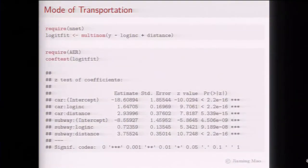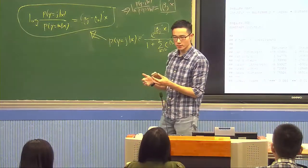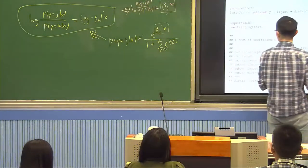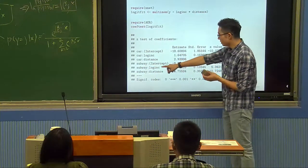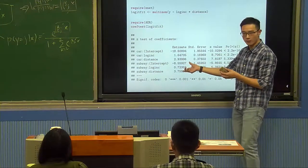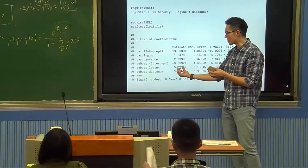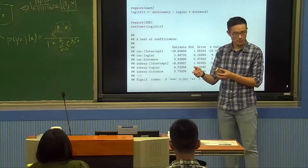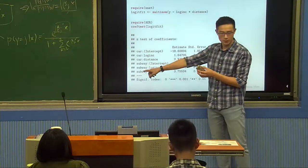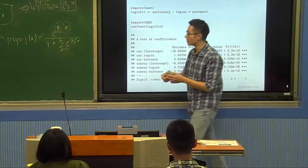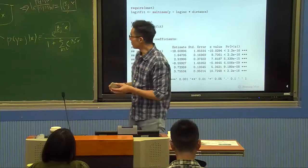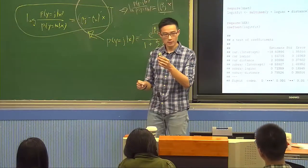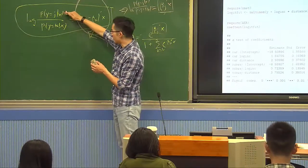In the example from last time, we estimated a choice model where people choose transportation mode: car, subway, or bus. Bus is the reference level, so we have estimates for car and subway. For the subway level, the intercept is minus 8, income is 0.7, and distance is 3.7. The coefficient 0.7 means that if income is higher, you are more likely to choose subway relative to bus — relative to the reference level.